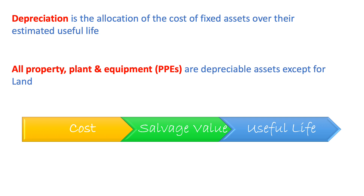For us to be able to do the depreciation we need first to identify the cost, the salvage value, and the useful life of an asset. The cost is the original price that we paid to buy the asset. The salvage value is the value of the asset after all depreciation has been fully expensed, and it is determined by the company. Finally, the useful life is the amount of time the company estimates for the asset to remain in service.